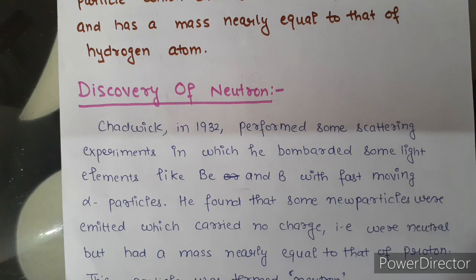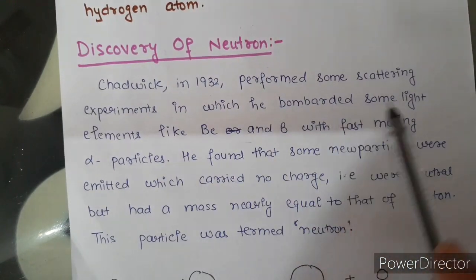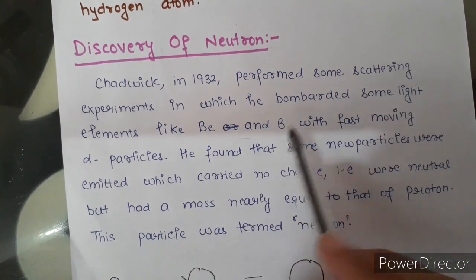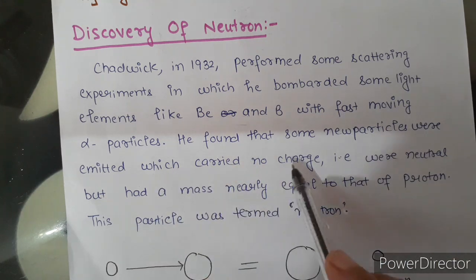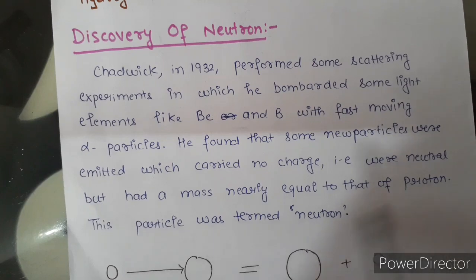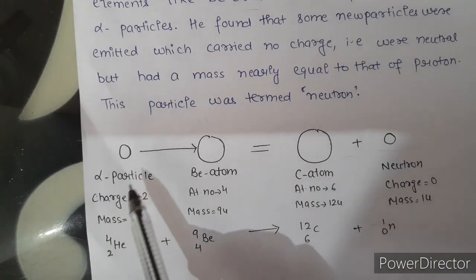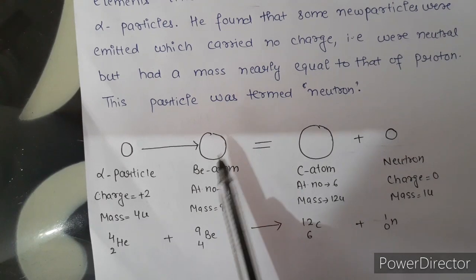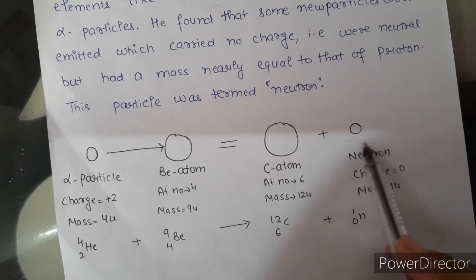To detect this neutral particle, Chadwick in 1932 performed scattering experiments in which he bombarded light elements like beryllium and boron with fast-moving alpha particles. He found that some new particles were emitted which carried no charge — they were neutral but had a mass nearly equal to that of the proton. This particle was termed as neutron. When alpha particles strike light elements, some new neutral particles are emitted, and that particle is now named the neutron.